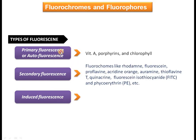Examples of primary fluorescence include vitamin A, porphyrin, and chlorophyll — they do not require any external fluorochrome and can be stimulated by UV or blue light. Fluorochromes like rhodamine are examples of secondary fluorescence, used to stain cellular components. Catecholamines are examples of induced fluorescence — normally inactive, they become activated and show fluorescence when stimulated with formaldehyde.